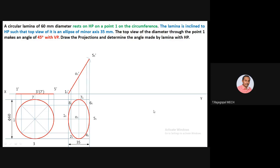Step five: the top view of the diameter through point one makes an angle of 45 degrees with VP. Anywhere on XY, draw a 45-degree inclination line without any specific length. Fix point one-one on this inclination line. Mark O1, then measure the distance of one-one and five-one in the top view — it is 35mm. Reproduce the same 35mm on this 45-degree inclination line. Through point O1, the major axis center is known; the major axis is 60mm. Draw the 60mm exactly on the 45-degree inclination line.